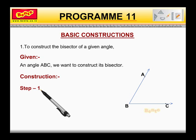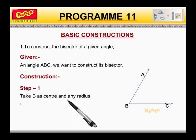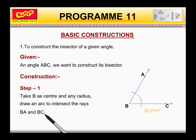Step 1. Take B as centre and any radius. Draw an arc to intersect the rays BA and BC, say at E and D respectively.